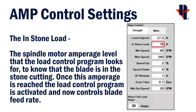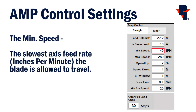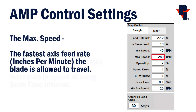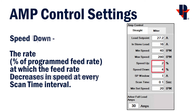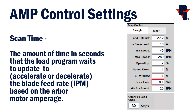The in-stone load setting is what actuates Amp control. Amp control will only engage when the arbor motor draws more than the values set. The minimum speed is the slowest the blade will travel with Amp control engaged, and max speed the fastest. The speed up and speed down values use a percentage of the program's feed rate. It will increase and decrease in speed, as needed, at every scan time interval. The scan time is how often it will look at the motor amperage to update the feed rate if necessary.